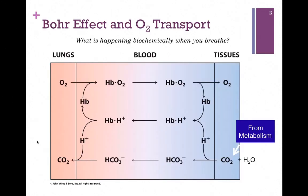In this rather complex diagram, we see what's happening biochemically when we breathe, and we're going to take this diagram apart piece by piece. On the far left, we see what's happening with hemoglobin in the lungs. It's going to pick up oxygen for delivery to the tissues, and it's going to release CO2 so that we can expel that from the lungs.